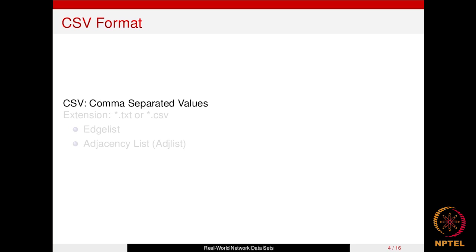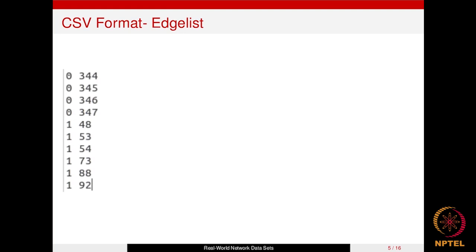CSV stands for comma-separated values, with file extensions either .txt or .csv. CSV files can be in two types: edge list format or adjacency list format. In the edge list format, every row contains two values — the source node and the target node. For example, rows might indicate edges from 0 to 344, 0 to 345, 0 to 346, and so on — basically a list of edges.